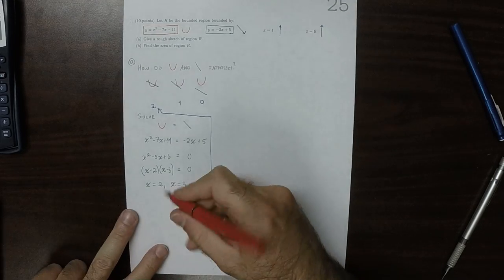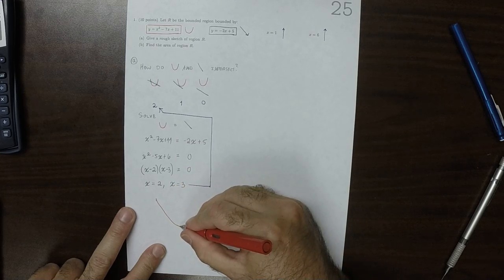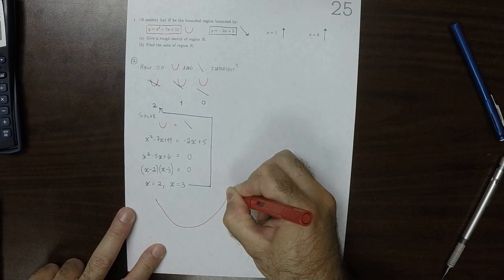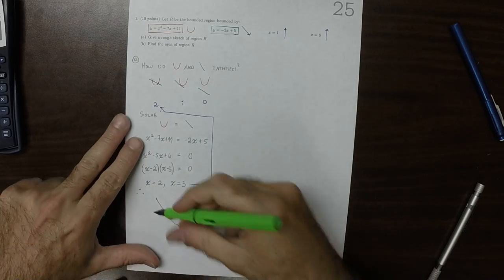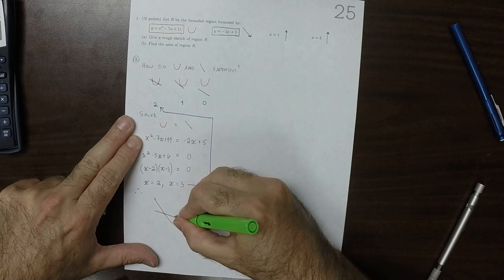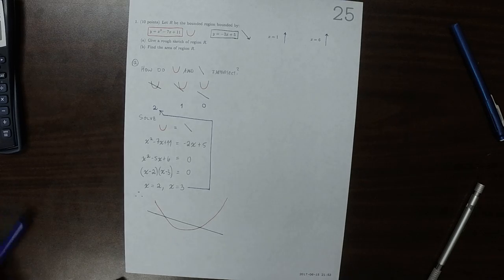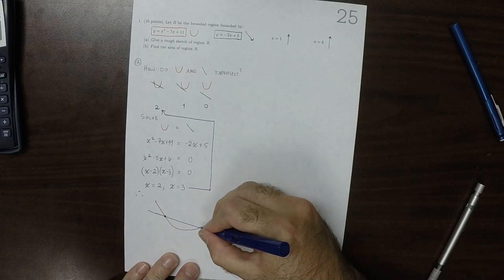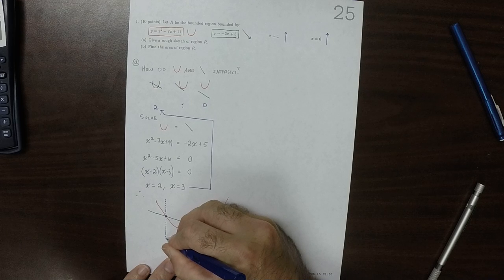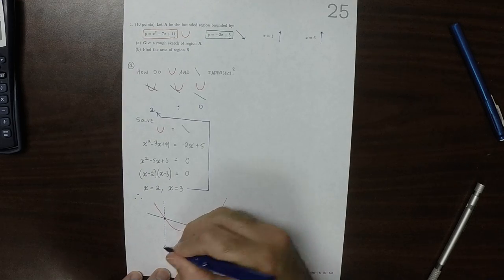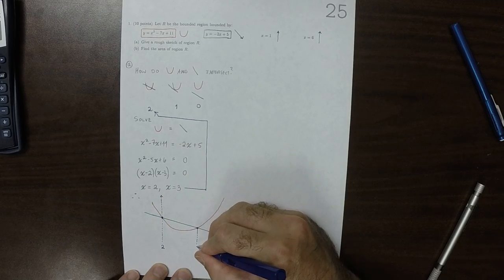So in particular, the picture looks like this. So we've got a parabola opening up, a parabola opening up, a line sloping down. We've got two intersections. This intersection is at 2. And this intersection is at 3.